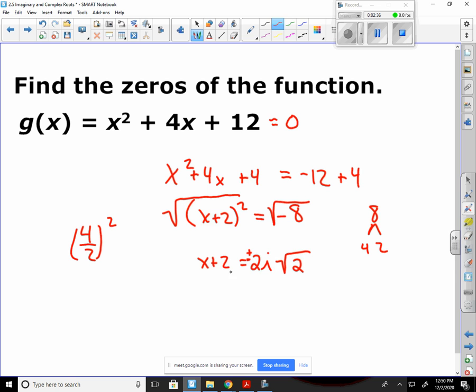Now to finish solving, I have to get this 2 over to the other side. So I have to subtract it over. Our answer is negative 2 plus and minus 2i root 2. And if you remember, this is a complex solution. And the reason it's complex is because we have a real part here along with an imaginary part here.